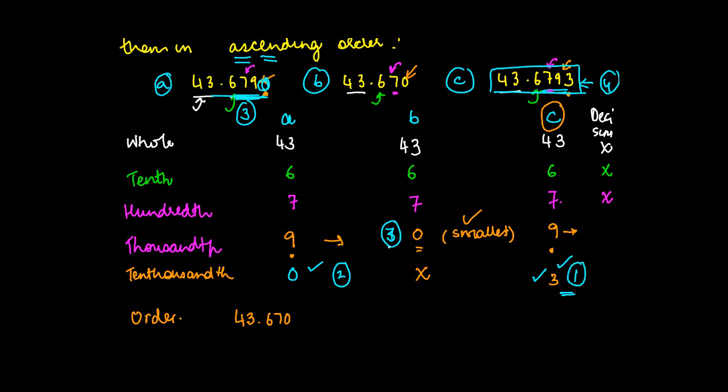The smallest one I've already plotted here, then the second one which is 43.679, and the largest one is 43.6793. The simple rule is that we had to convert this into a like decimal. Of course, I didn't do it in the first stage because in many cases you may not even be required to do that.